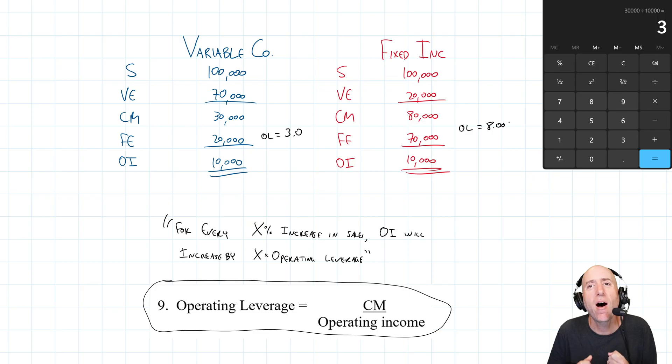What does operating leverage mean? It means how swingy are profits compared to a change in sales. So here's how to think of it. For every X percent increase in sales, operating income will increase by X times the operating leverage. So if sales, for example, go up 10%, let's just say both companies are projecting sales are going to go up 10% next year. So they're both in sales are going to go up by 10%, operating income will increase by 10% times that operating leverage factor.